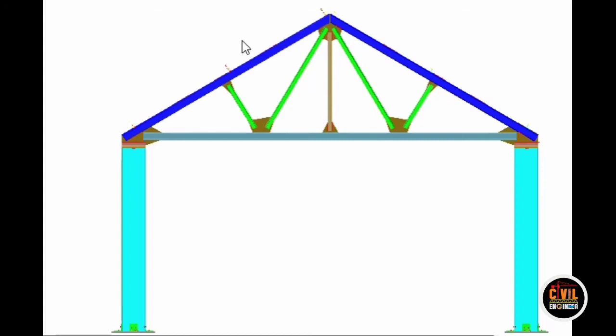This is the principle rafter, which will normally be a compression member if this truss is subjected to vertical loads. If it is under inclined load, this may be subjected to either a compressive load or a tensile load. If this truss is subjected to vertical loads — as you already studied in first year engineering mechanics, the analysis of trusses by joints, method of sections, or graphical method — we are not going to analyze here; loads will be given and we are going to design. Members subjected to compressive load are called struts.